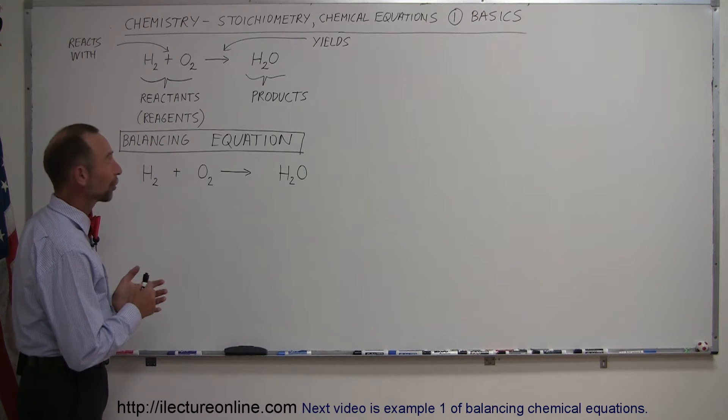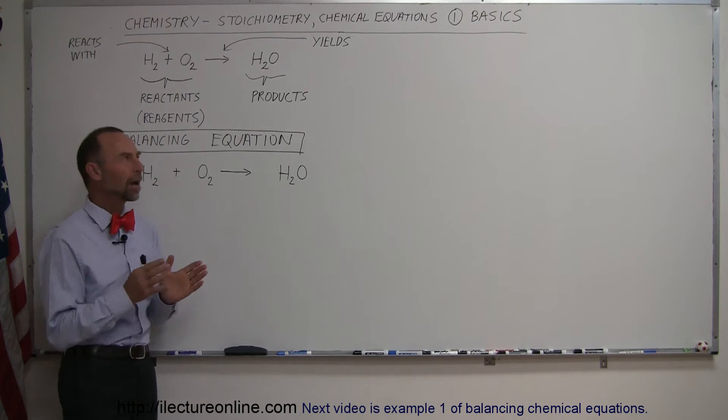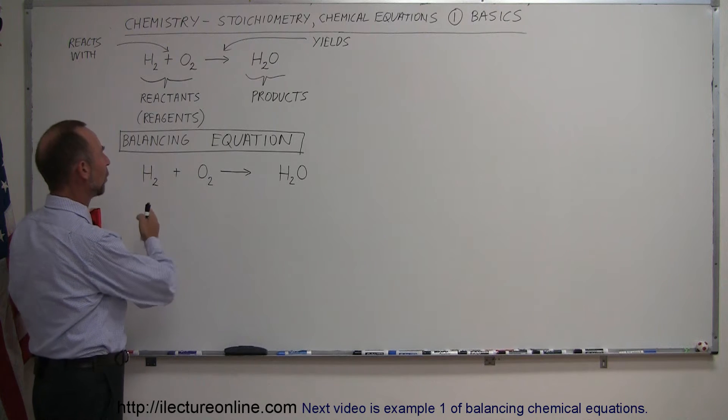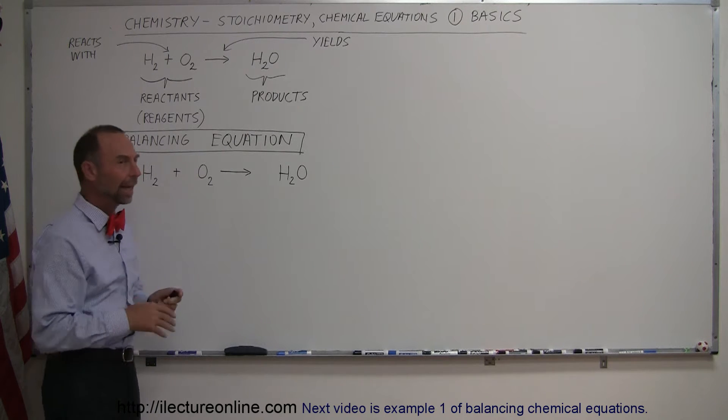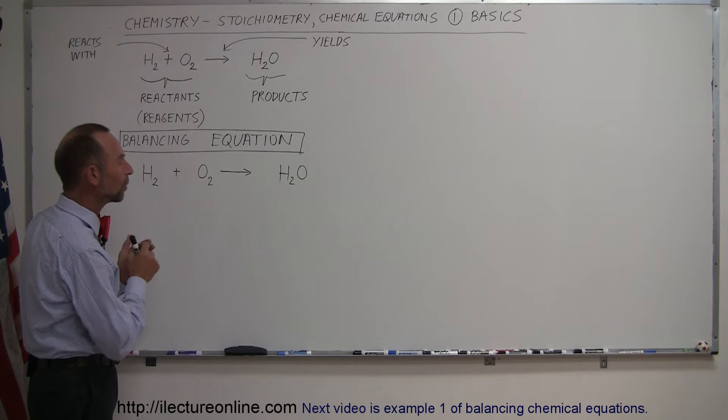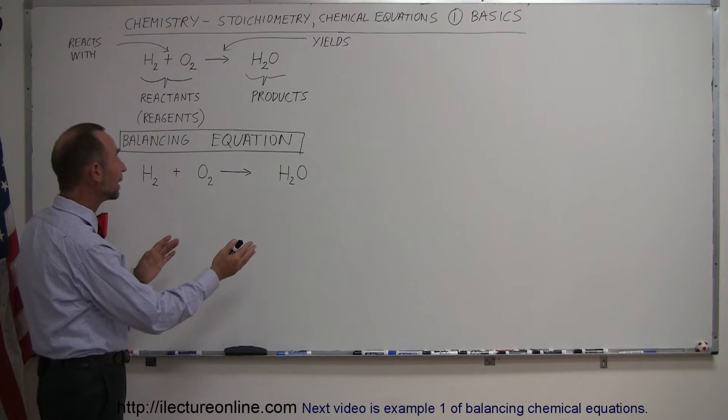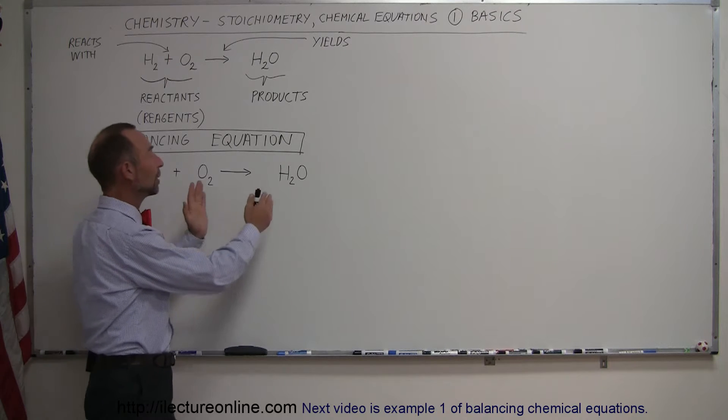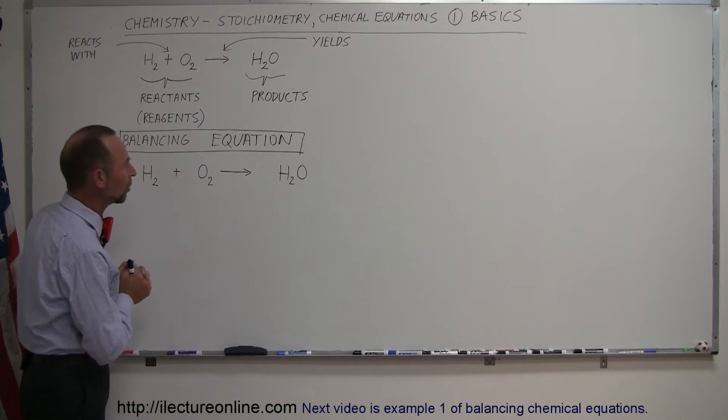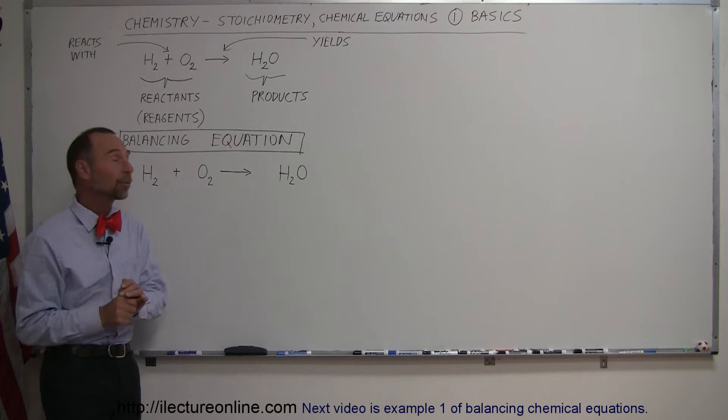Sometimes we also call it stoichiometry, because we learn how to not only understand what an equation is and what constitutes an equation, but also learn how to balance the equation and how to properly calculate how much you start with and how much you end up with. We talk about products that you start with and products you end up with. Now we don't call them products in chemistry.